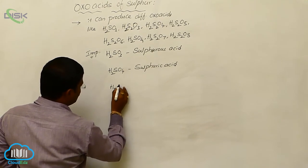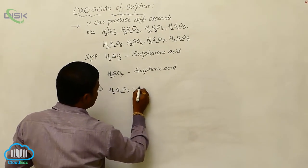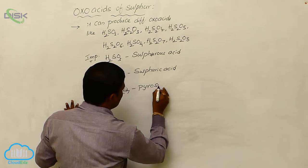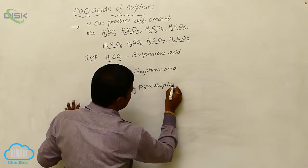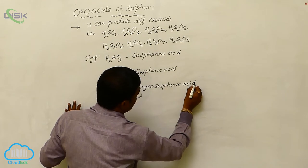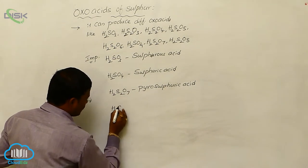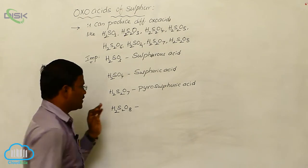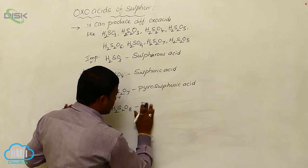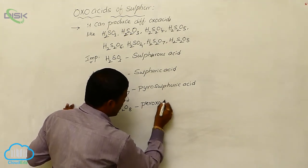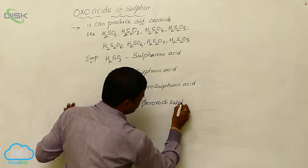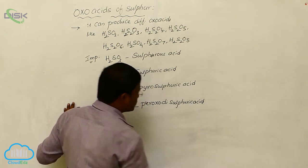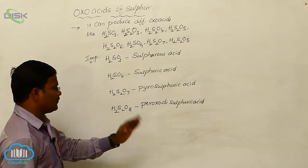One more important sulphur oxoacid is H₂S₂O₇, which is also a most important sulphur oxoacid. We can call it pyrosulphuric acid. One more important oxoacid having the molecular formula H₂S₂O₈ is called peroxodisulphuric acid, or peroxosulphuric acid.